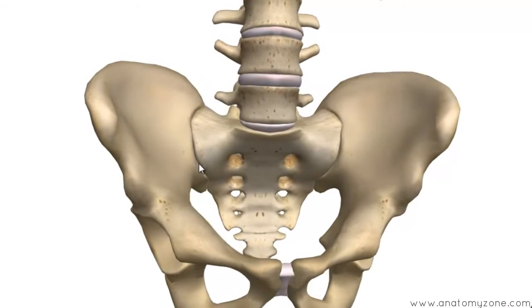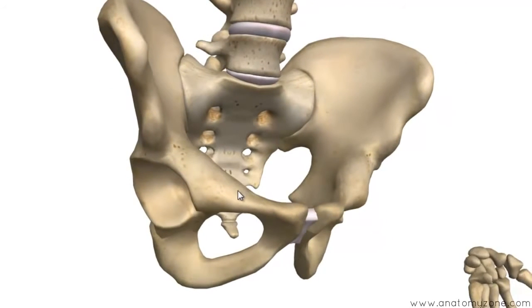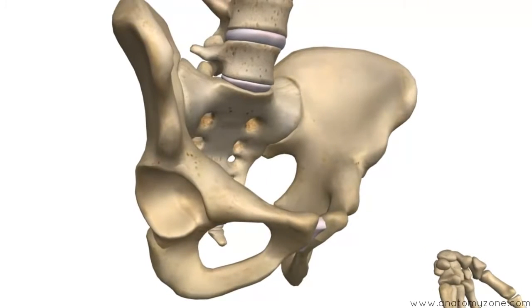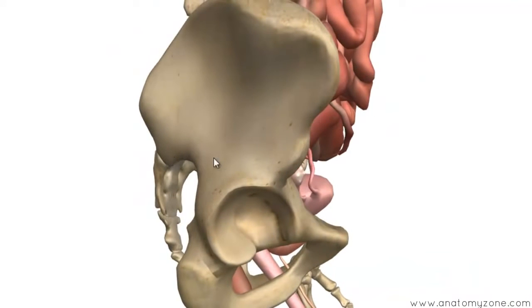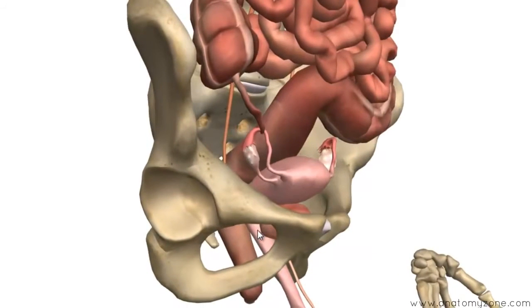The lesser pelvis begins at the pelvic inlet, which is formed by this rim here — the body of S1 and this rim around here. So this is the pelvic inlet, and below this you've got the pelvic cavity, housed in the lesser pelvis or the true pelvis. Bringing in the abdominal organs, you can see the upper part of the pelvis sits with them, whereas the lesser pelvis — you can see the pelvic inlet at this rim. Anteriorly you've got the bladder, the reproductive tract behind it, and most posteriorly, the rectum. These all lie in the pelvic cavity within the true pelvis.